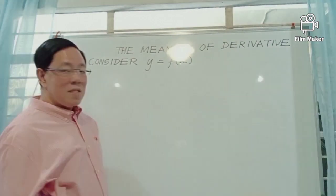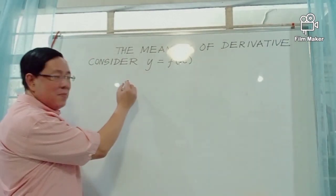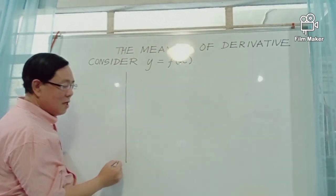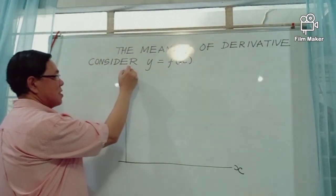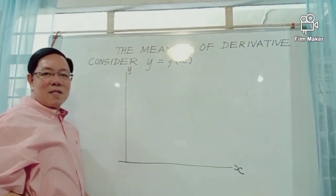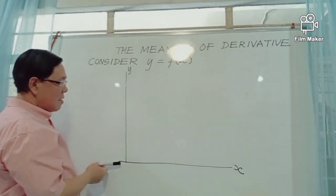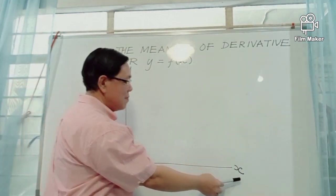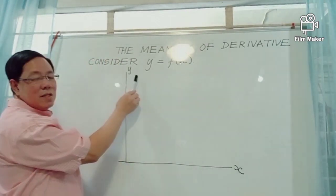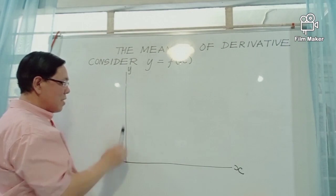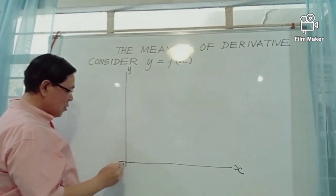Now, suppose we sketch the graph of the function f of x. The graph is drawn in the Cartesian plane, or rectangular coordinate system, which consists of two axes. In the horizontal axis we write the independent variable x, and in the vertical axis we write the dependent variable y. At the intersection of the two axes is the point we call the origin.